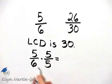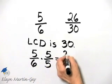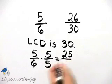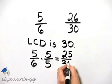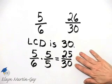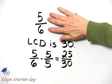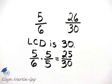So how do I multiply these? 5 times 5 is 25, and 6 times 5 is 30. This fraction is equivalent to 5/6, but with a denominator of 30.